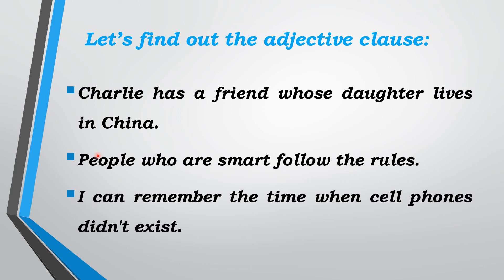Let's move on to the next example: 'People who are smart follow the rules.' What is the noun here? People. What is the relative pronoun? Who. So 'who are smart' is the adjective clause — it describes the noun 'people.' Then the third example: 'I can remember the time when cell phones didn't exist.' The relative pronoun is 'when,' describing the noun 'the time.' So adjective clauses describe the noun and function like an adjective.